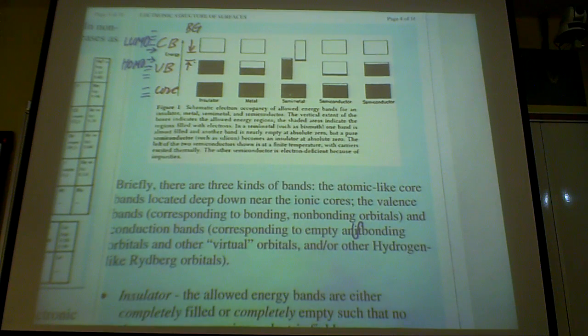The valence band corresponds to bonding and non-bonding orbitals normally, and then you have the conduction band, usually corresponding to anti-bonding, some of them. Of course, in the valence band, you also would have anti-bonding orbitals as well.